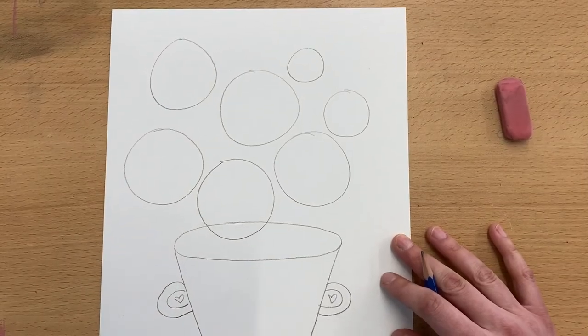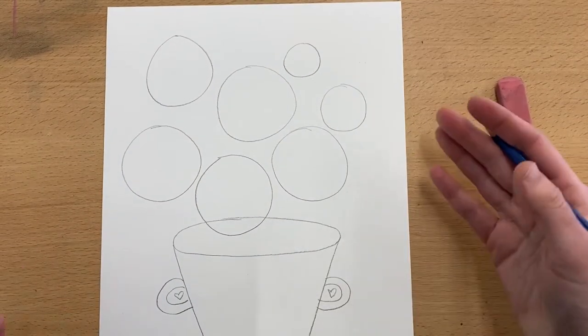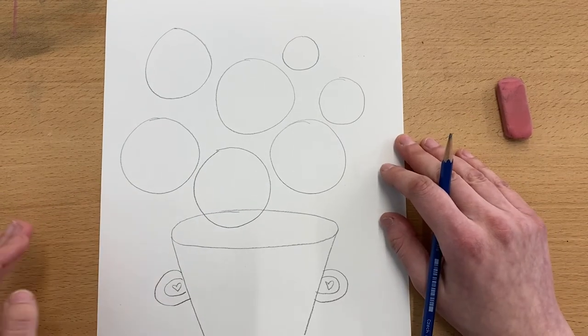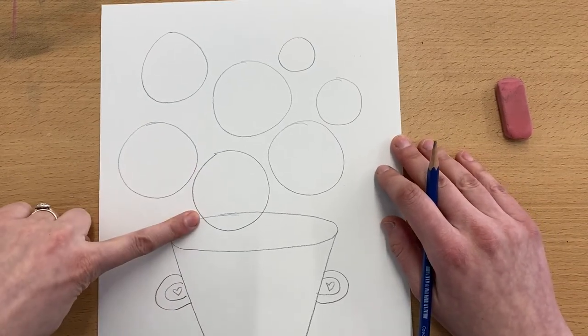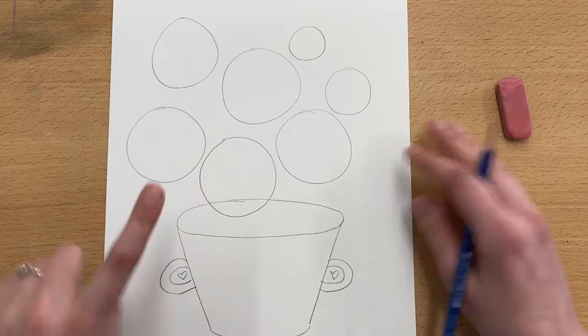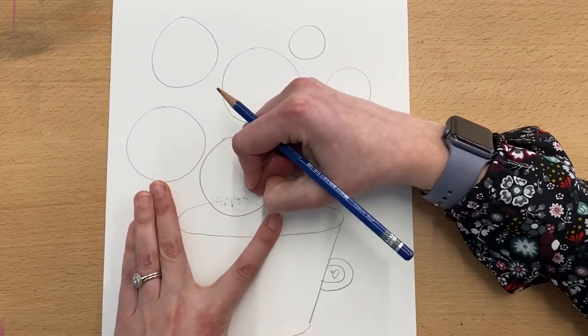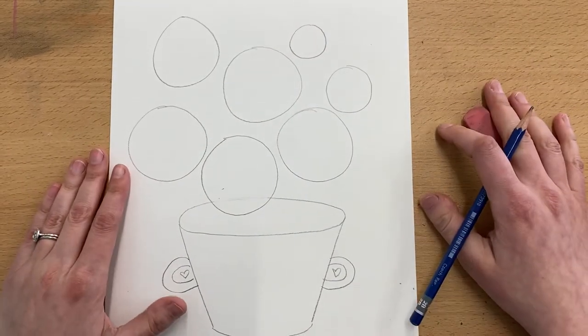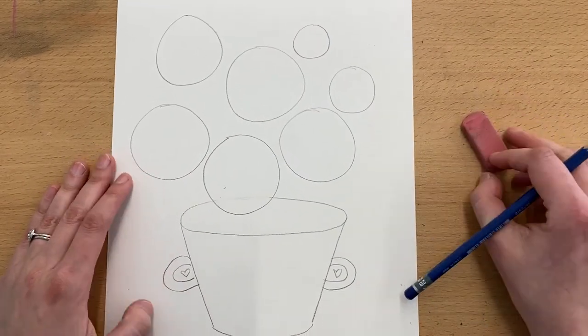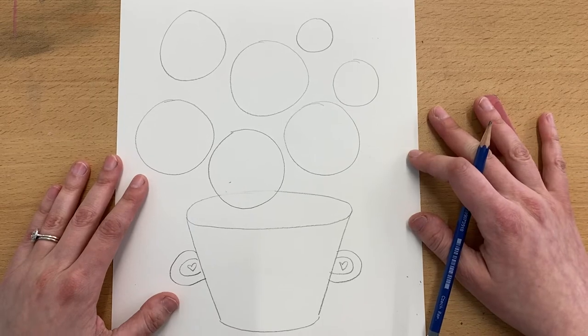All right, so I have gone ahead and drawn in some of my circles. These are going to become my flowers. Now you can probably see right here I drew over part of the oval that's the opening of our vase, and that's okay. Things overlapping is really normal. I'm just going to erase that line that I don't need anymore. You might have that come up a couple times when we're creating this drawing.